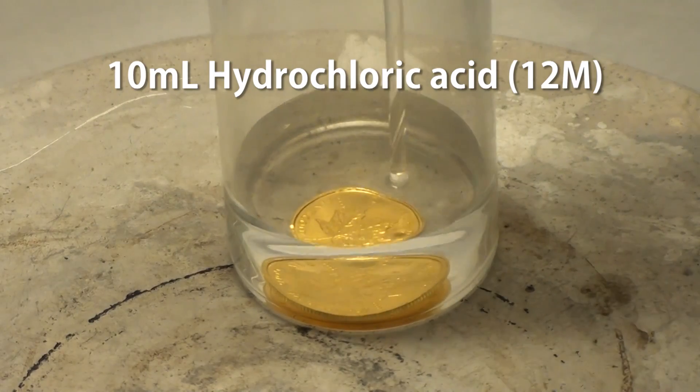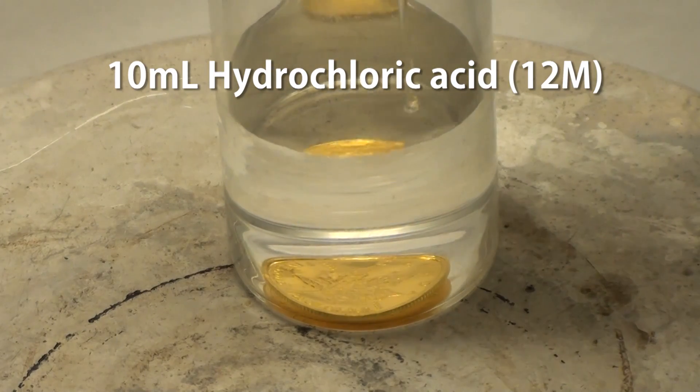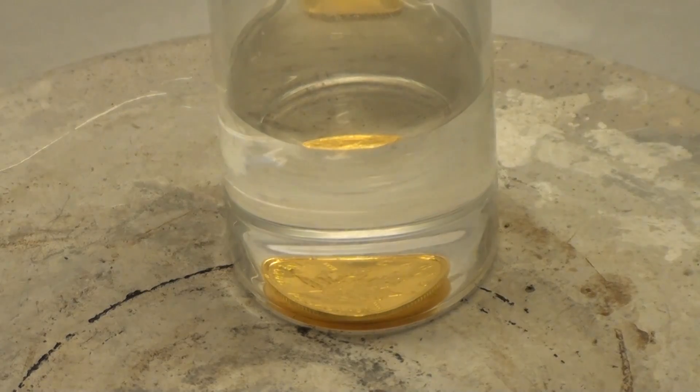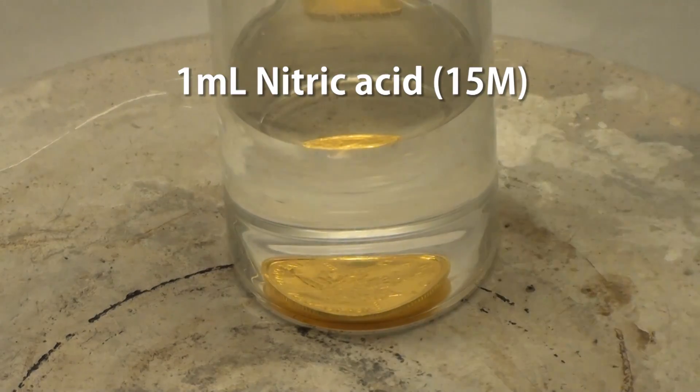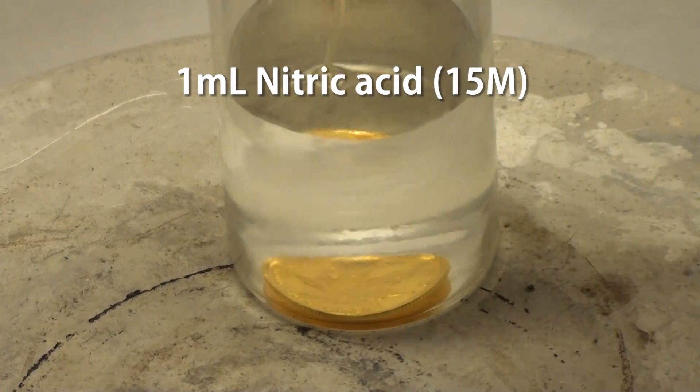Now we add 10 mL of concentrated 12 molar hydrochloric acid. By itself the acid does not react with gold, so we add another 1 mL of concentrated 15 molar nitric acid.